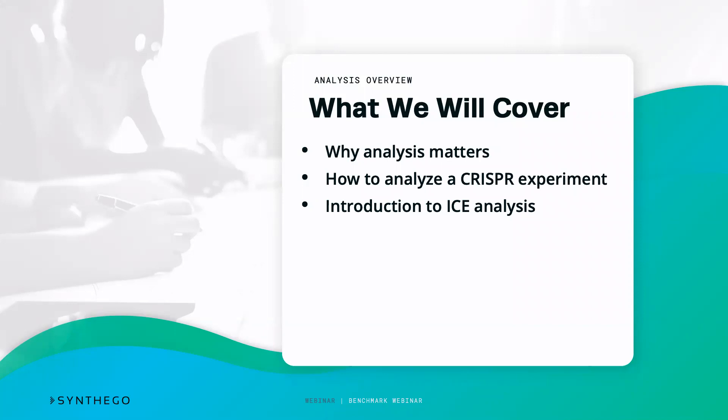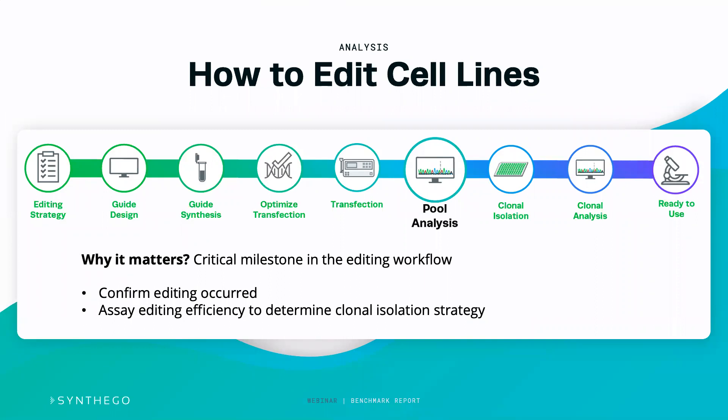Analysis comes in after transfection, when you have a pool of edited cells. This is a critical junction in the editing workflow — it's important to confirm that editing has actually worked, because this will drastically influence whether you can use that pool directly, how many single-cell clones you need to make, and whether it's more worthwhile to go back and re-optimize the transfection to achieve higher editing efficiency.